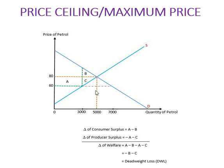After imposing the ceiling price, supply goes down because at a lower price suppliers will supply a lesser amount of goods, while consumers will try to consume more. At a price of 60, supply will be 3000 units and demand will be 7000 units. However, since supply is limited, the actual quantity traded stays at 3000 units.